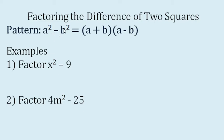a squared minus b squared equals the quantity a plus b times the quantity a minus b, meaning to say there are two binomial factors. The first binomial factor is the sum of the two terms, while the second binomial factor is the difference between the two terms.